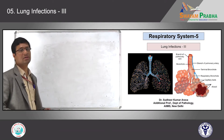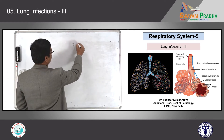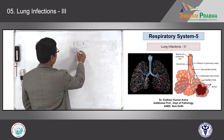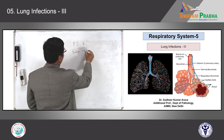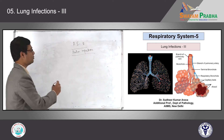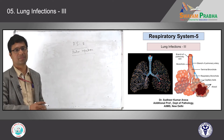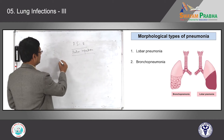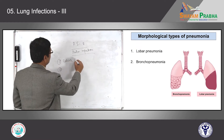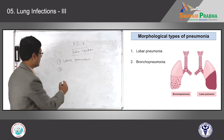Now we have the last lecture regarding pulmonary infections. This is the respiratory system. This is the fifth lecture on pulmonary infection — pneumonia. In this class we will be talking mainly about the pathological aspects of pneumonia. How can you categorize pneumonia pathologically? Pneumonia is broadly categorized as lobar pneumonia and bronchopneumonia.